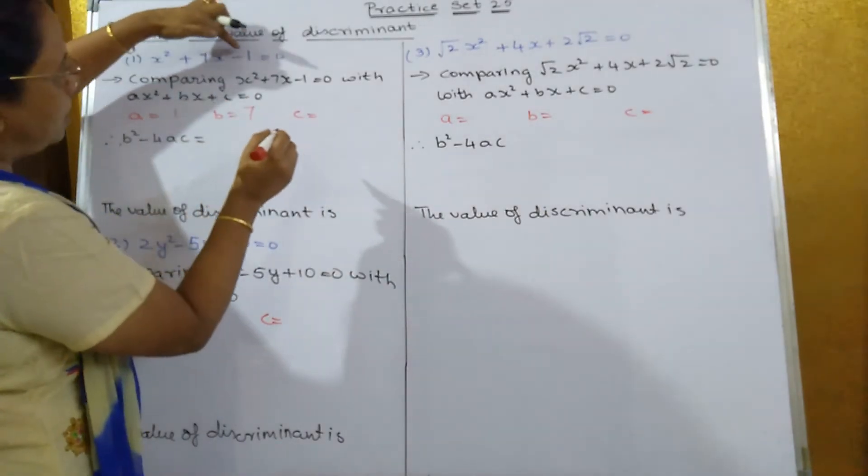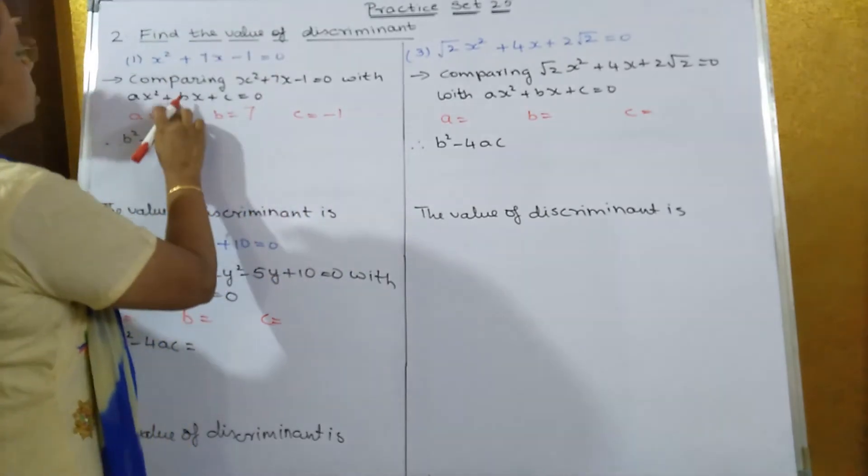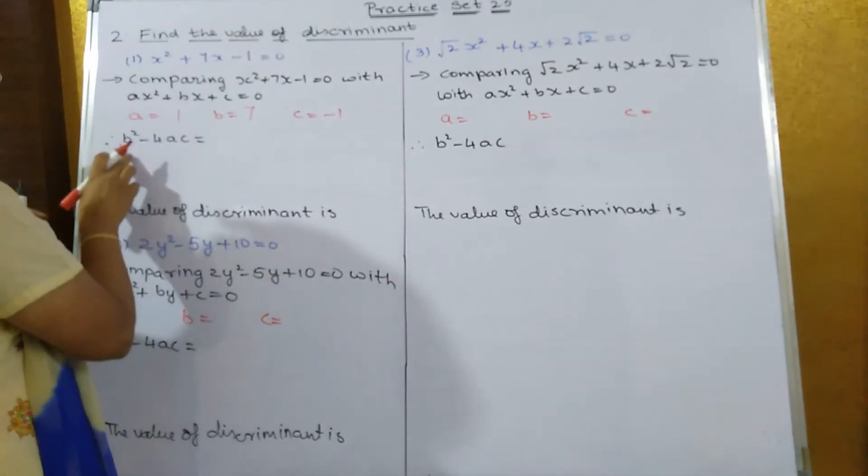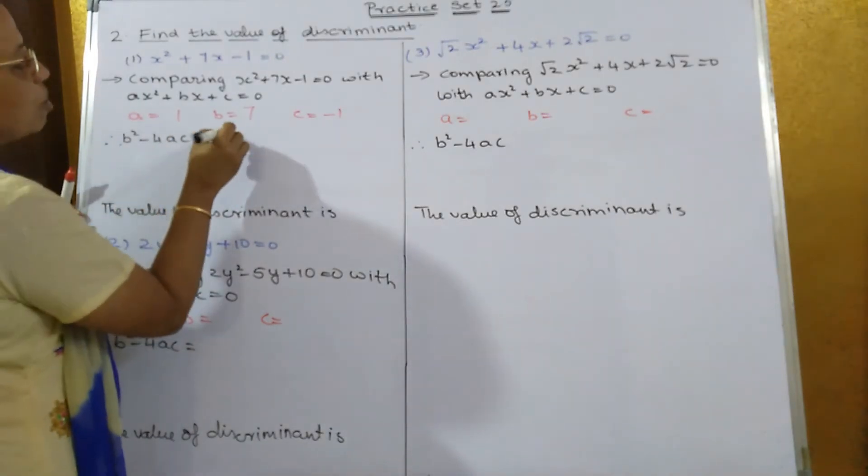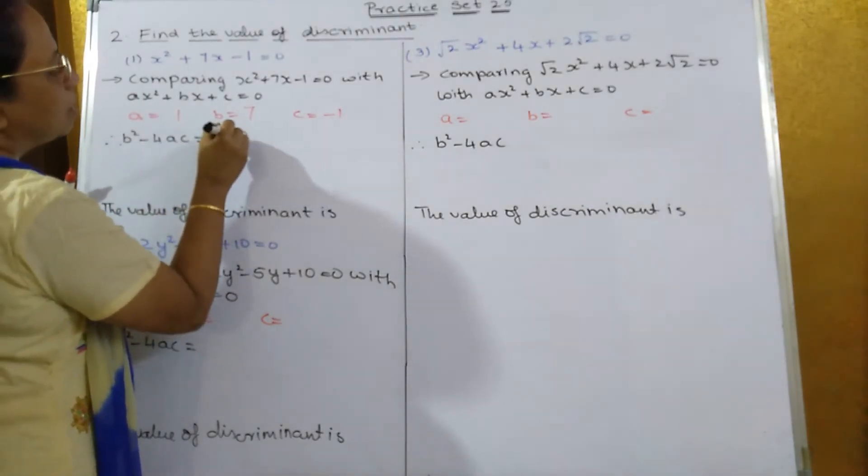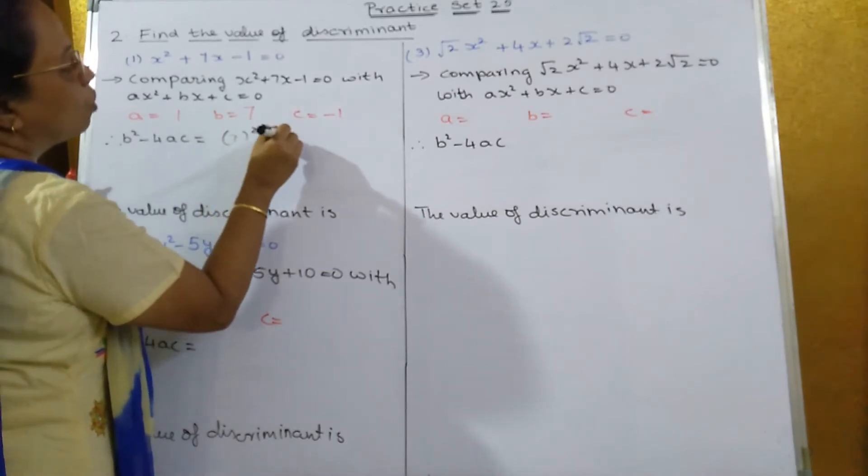And c is equal to what? Minus 1. So the value of discriminant, what formula will you use? b² - 4ac = 0. So what is your b over here? 7. The whole square minus 4.